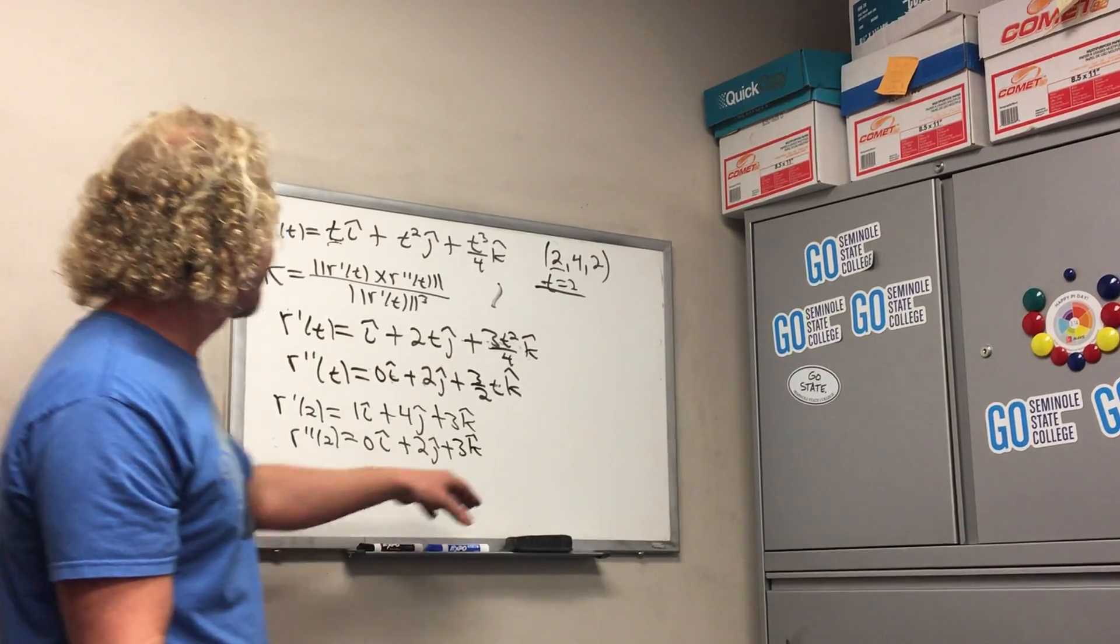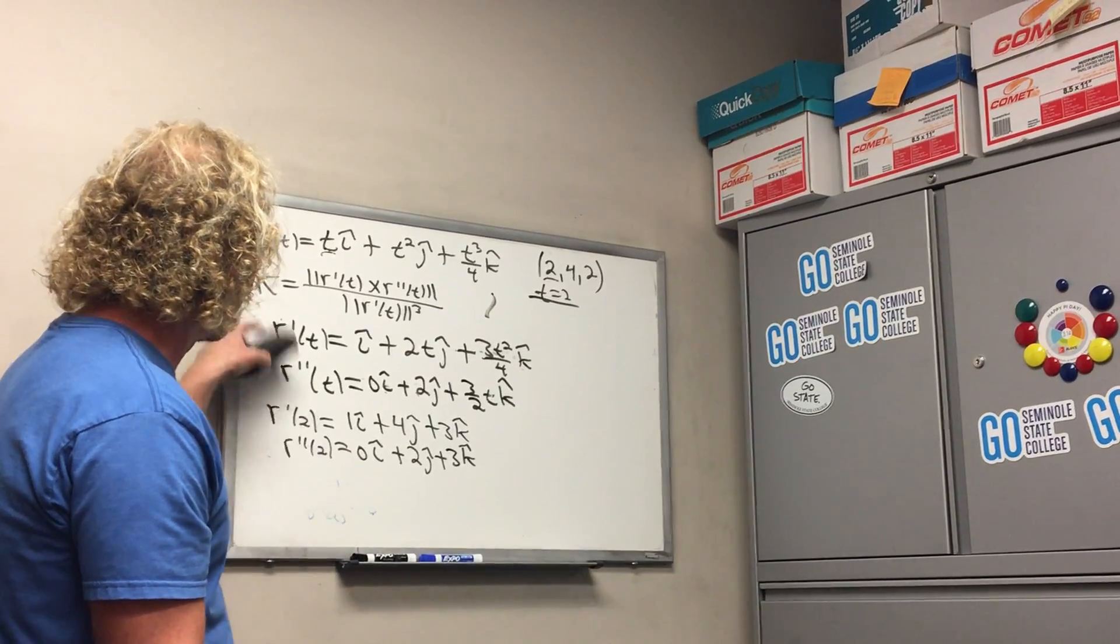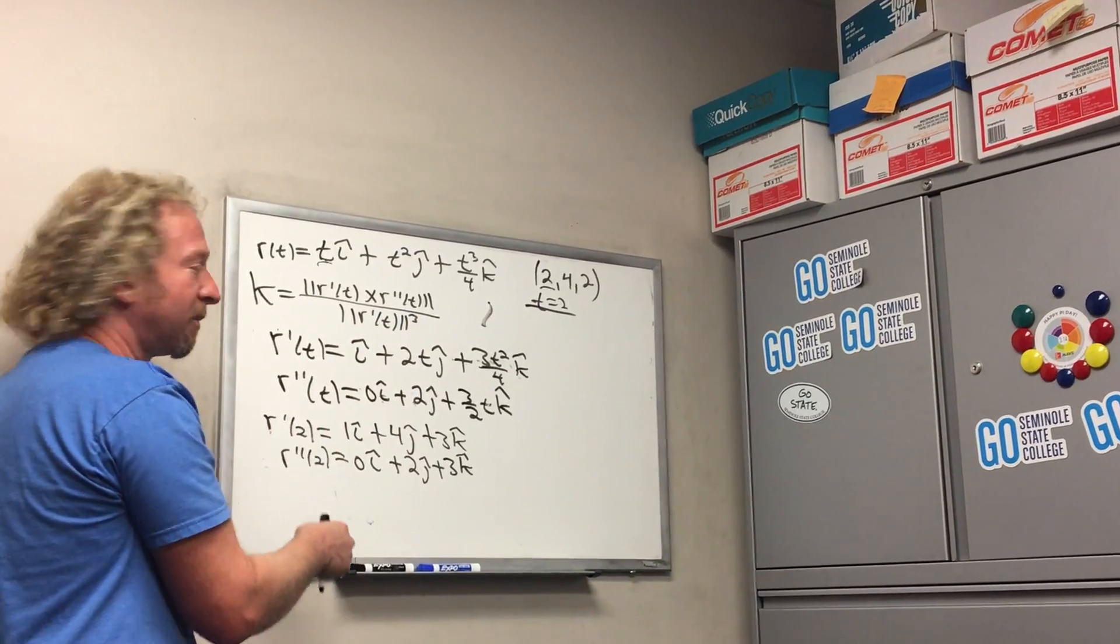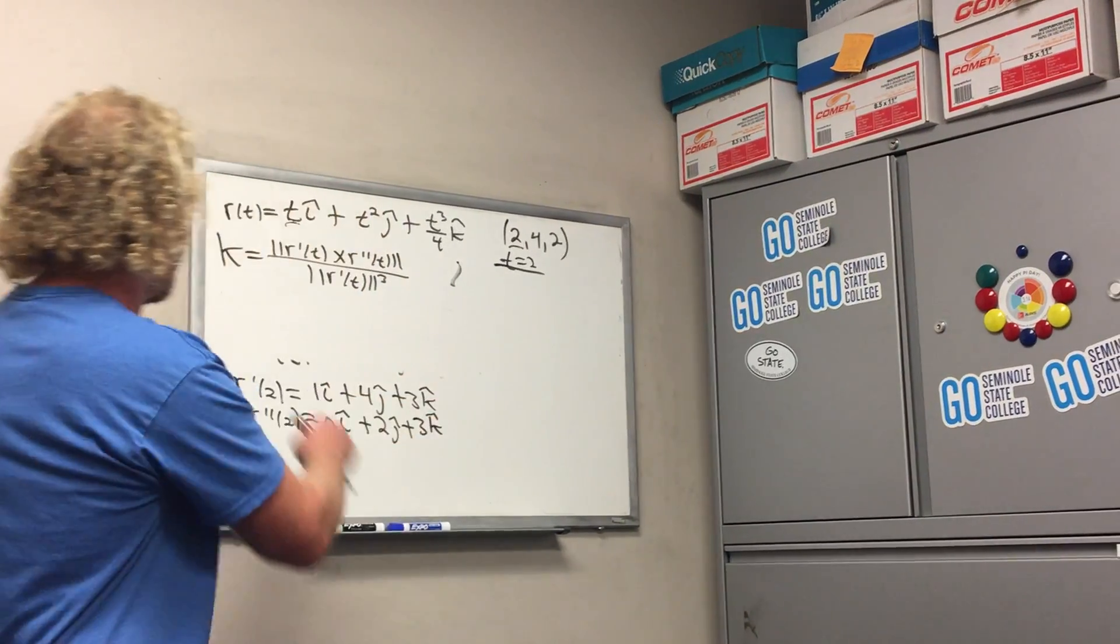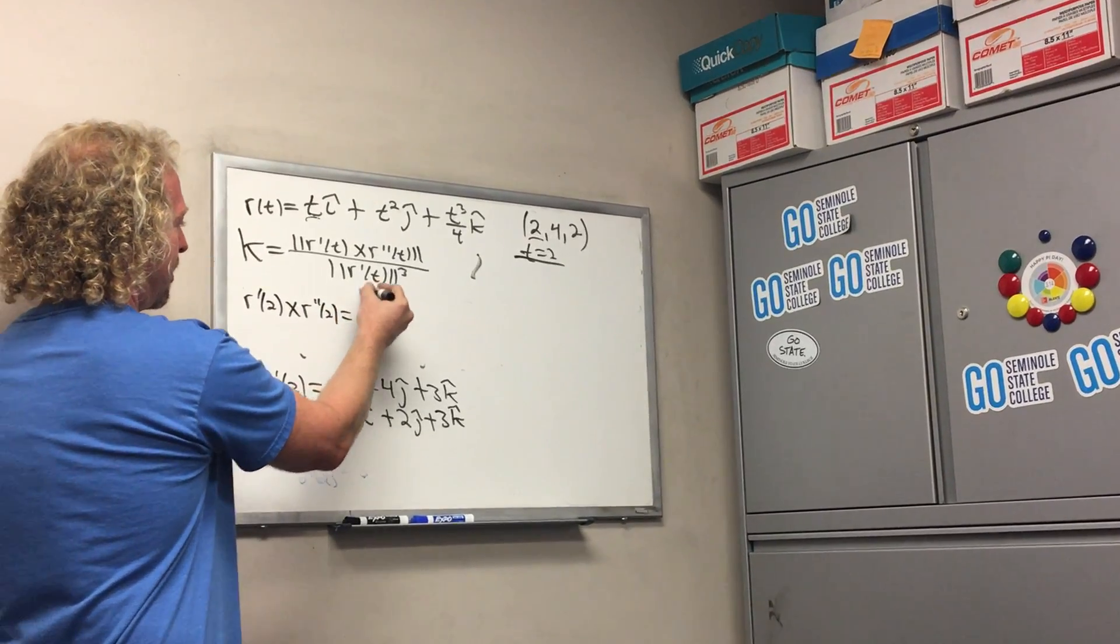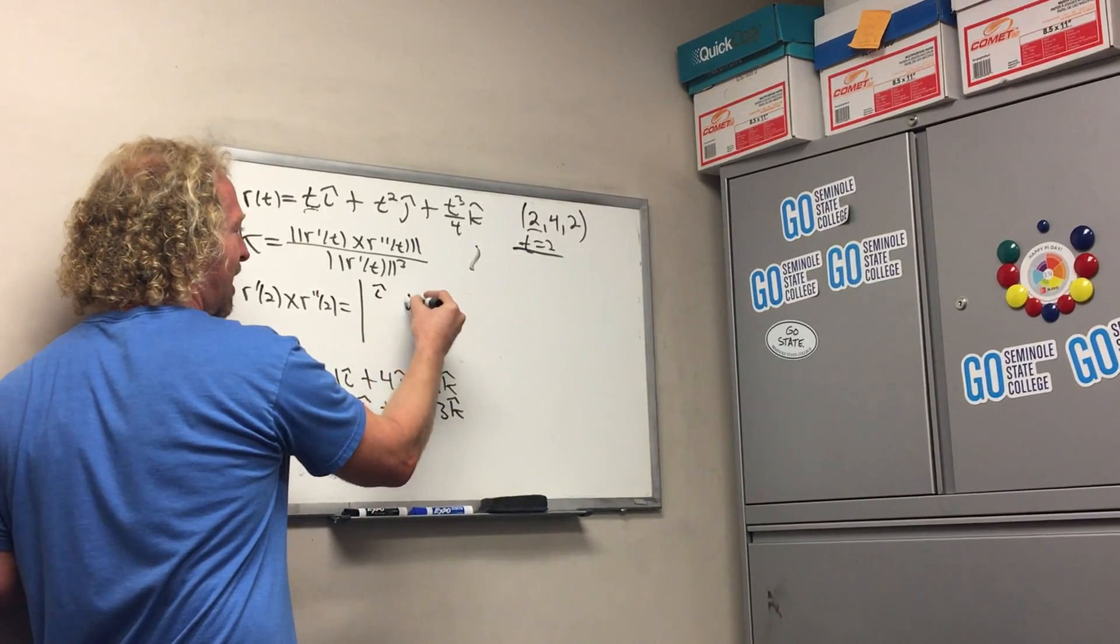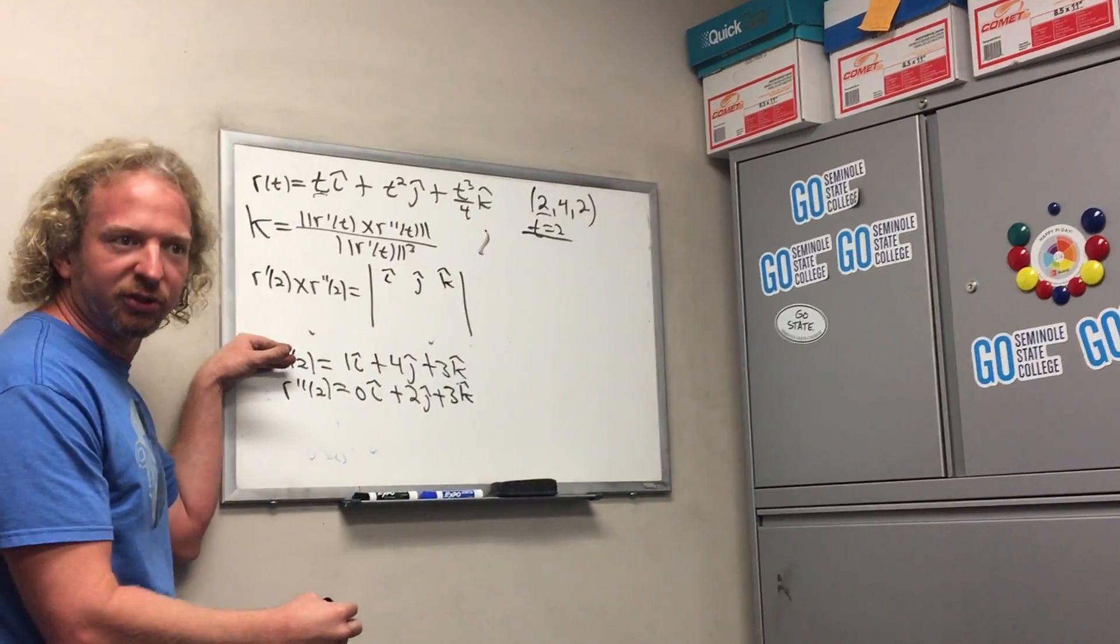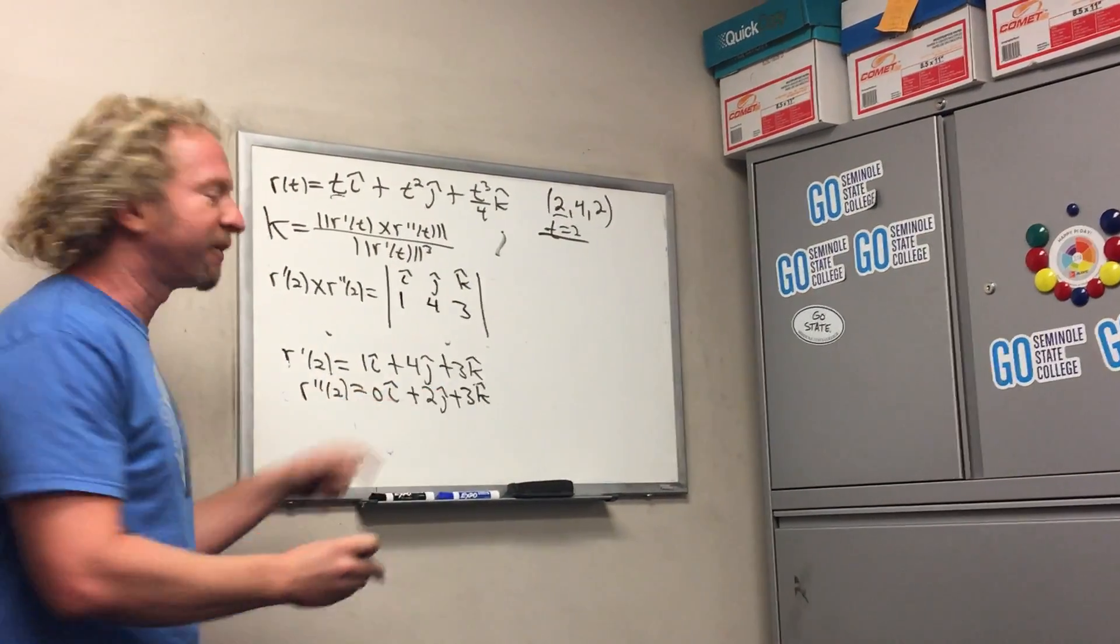So now we've got to take the cross product. That's all we'll need for the formula - we'll take the cross product, take the magnitude, and then take the magnitude of this guy cubed. So up here we have r'(2) cross r''(2). So what goes in the first row? i j k. So i hat, j hat, k hat. Like a pro. And then 1, 4, 3. That one goes first. It's a good review for Stefan too. And then 0, 2, 3.